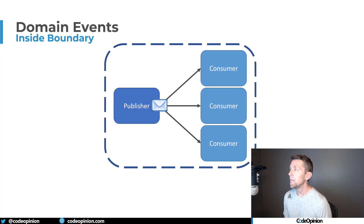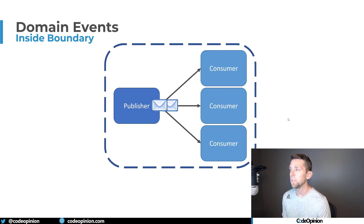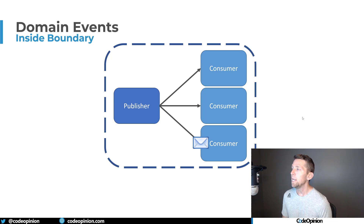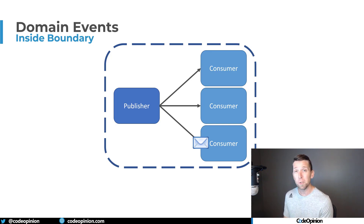First let's talk about domain events. Usually what people are referring to here is within a boundary you have some specific code that performs some state change and then needs to notify another part of that boundary that it's occurred. So it sends that message to the first consumer, the second consumer, and then finally the third consumer. This is done in-process — not using a message broker or external queue — all done in memory, and most times wrapped within the same transaction, so all consumers must actually succeed.